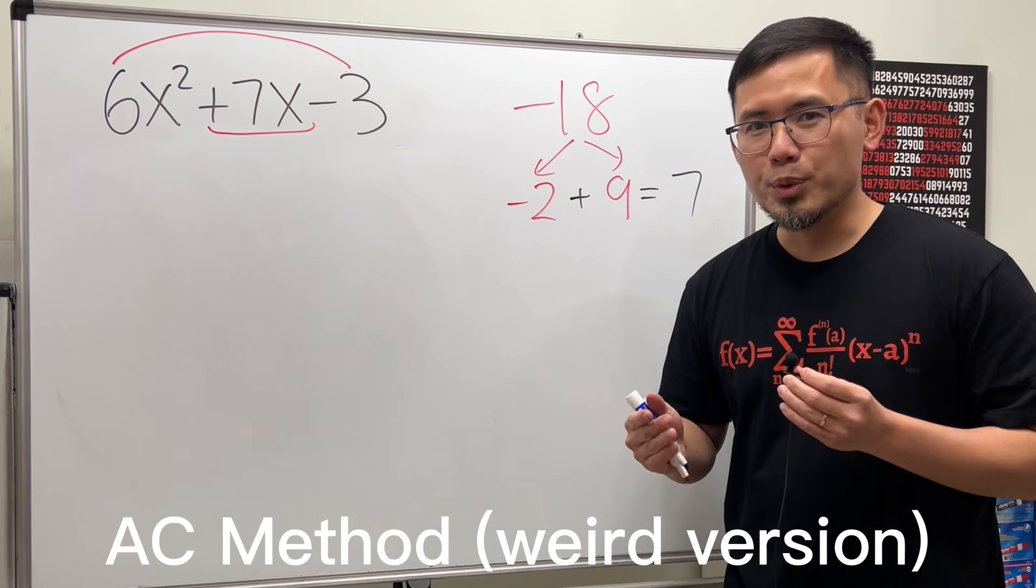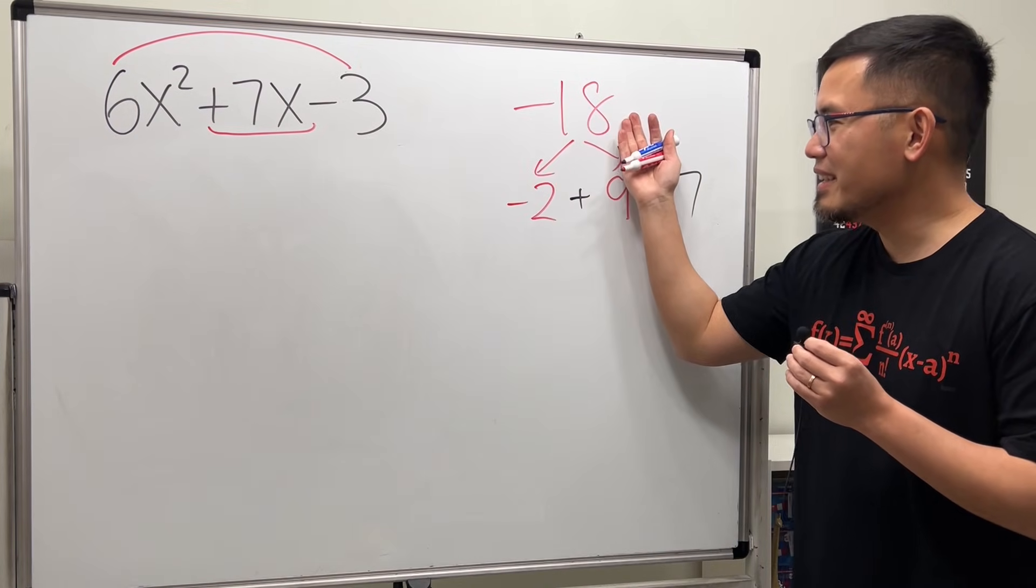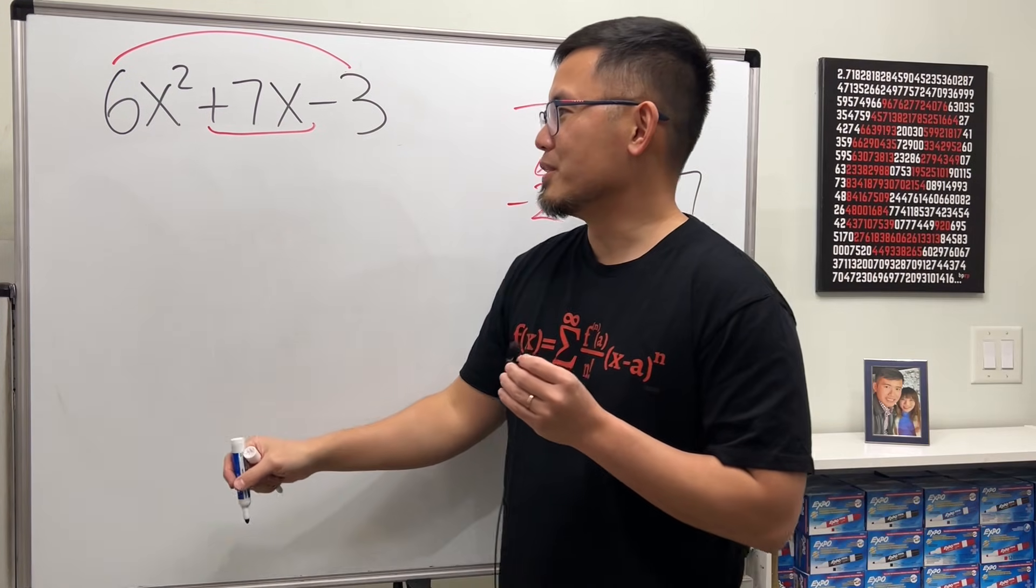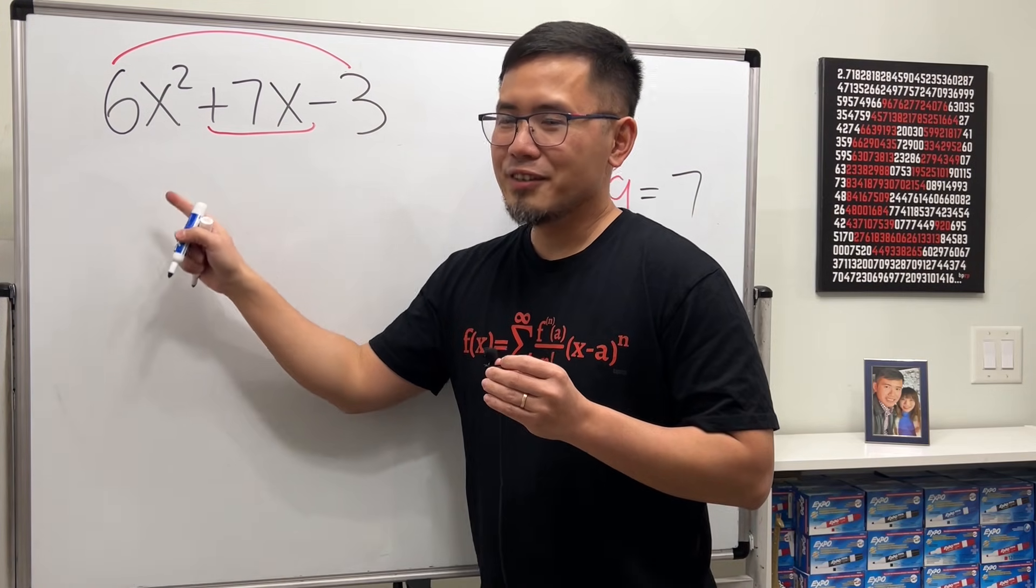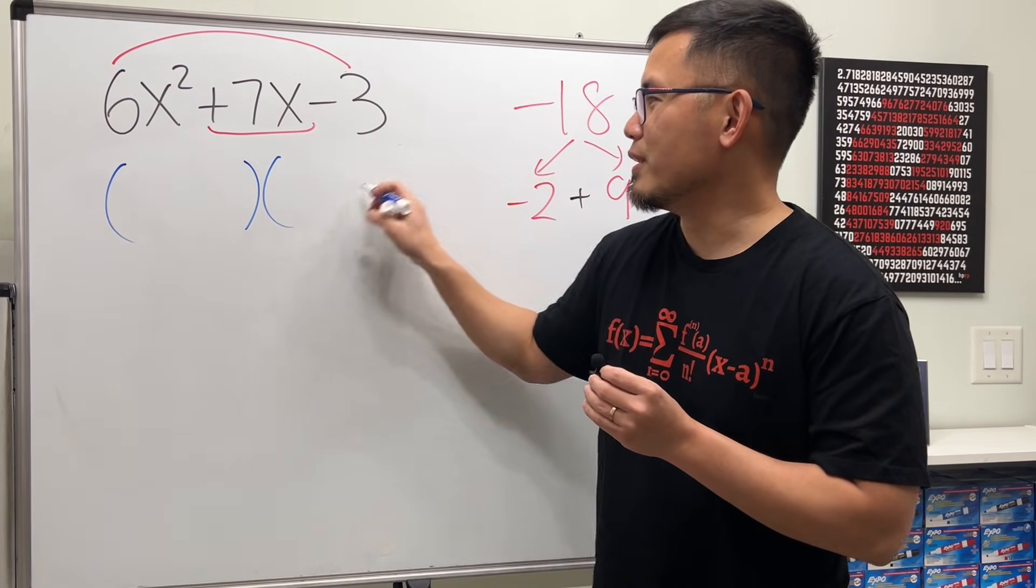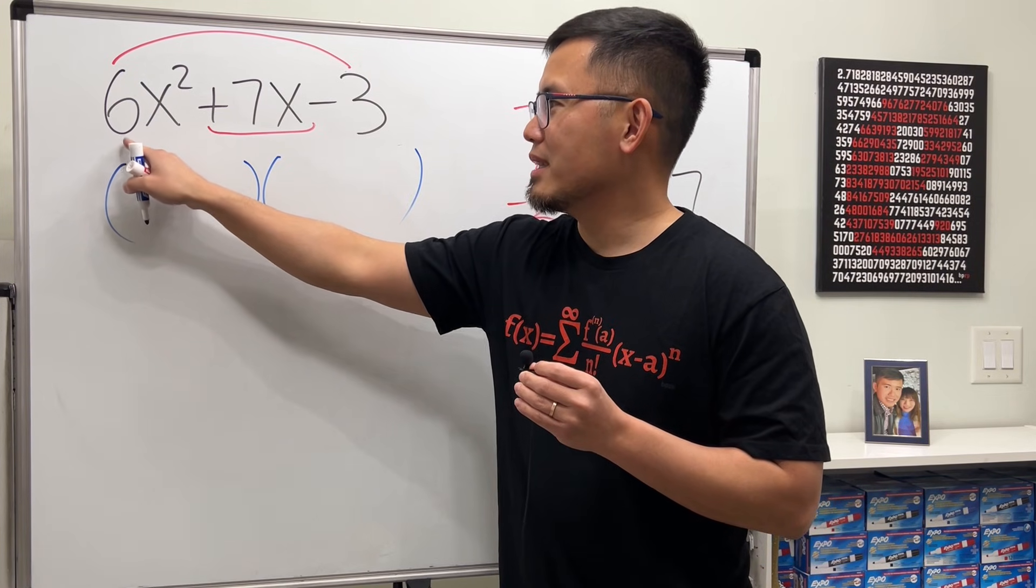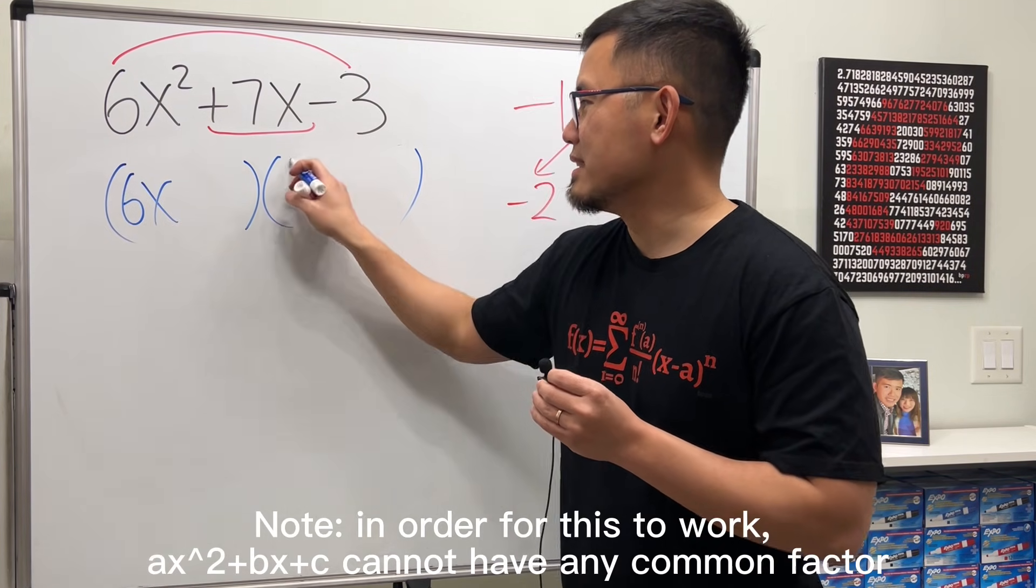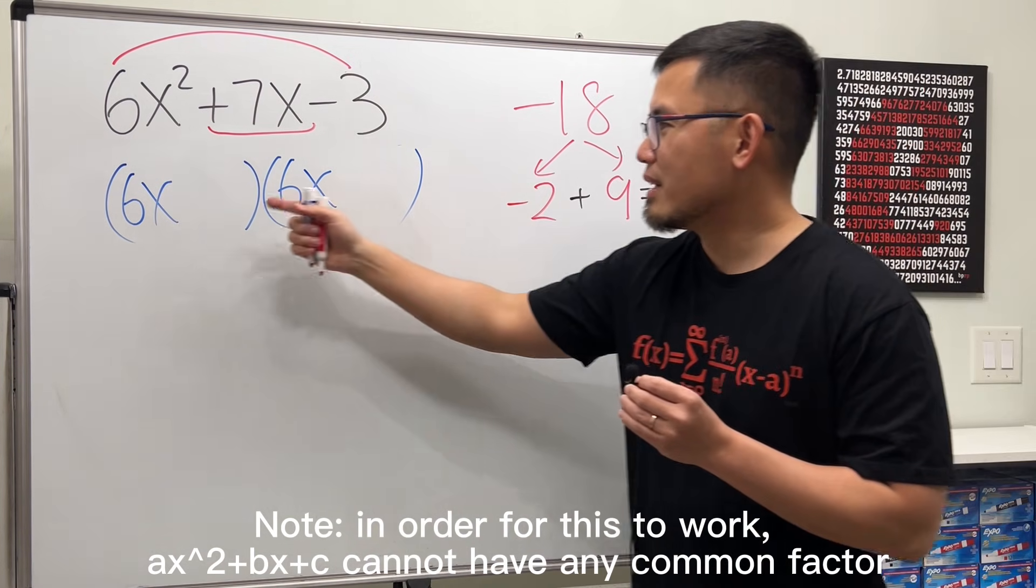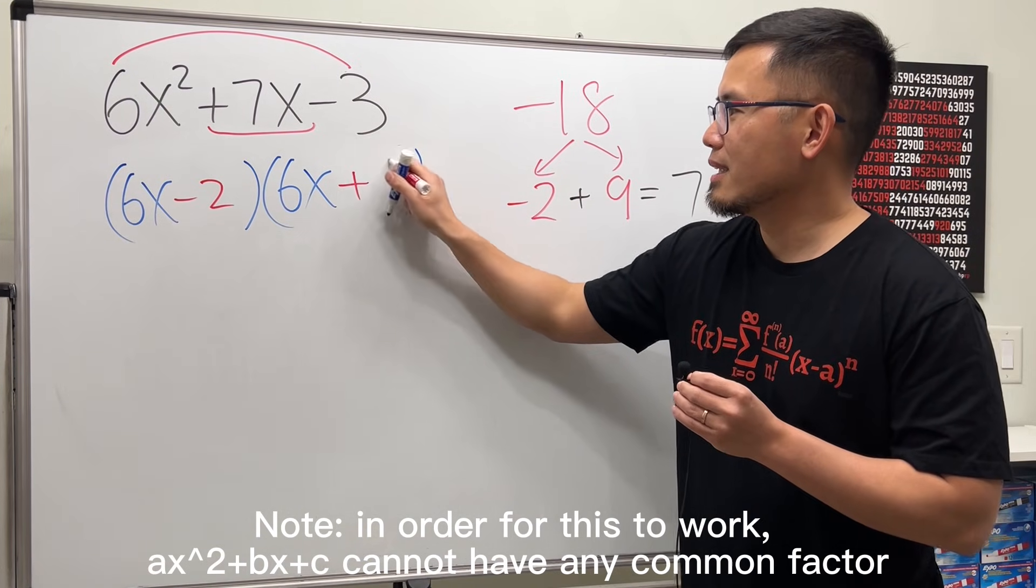Now, for the third method, it gets a little bit weird. We still need to do a times c and get negative 18, and we still need negative 2 and 9 to get a 7. Check this out. Instead of doing this by grouping or drawing the box, we first just draw two sets of parentheses. You see here we have 6x squared. Just go ahead and write down 6x and 6x. Trust me, it works.